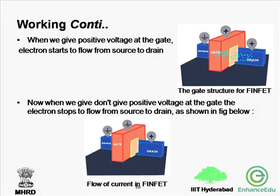When we give a positive voltage at the gate, electrons start moving from the source to the drain. This flow of electrons can be shown in the figure — a side gate structure for the FinFET. Now when we don't give any positive voltage at the gate, the electrons stop flowing from the source to the drain, as shown in the figure.